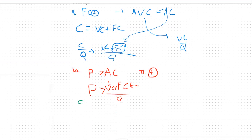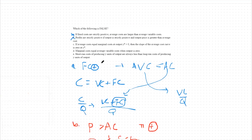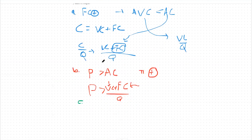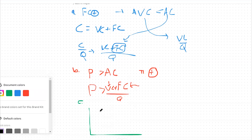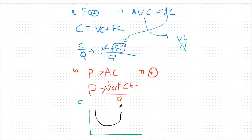Let's take a look at Part C. It asks: if average costs equal marginal costs at output y* greater than zero, then the slope of the average cost curve is zero at y*. Looking at the graph, our average variable cost curve looks like a U-shape, and our marginal cost curve intersects it at exactly the slope of zero at the bottommost point of the average variable cost curve.